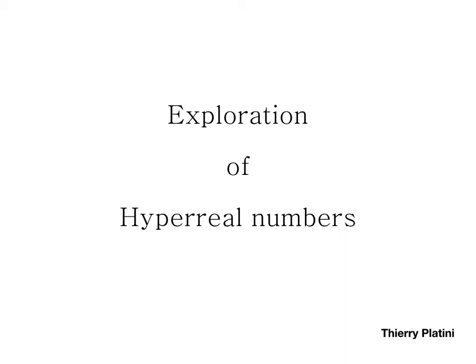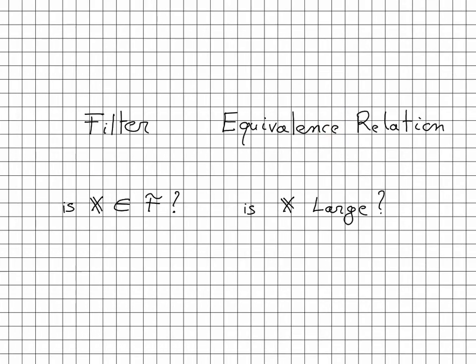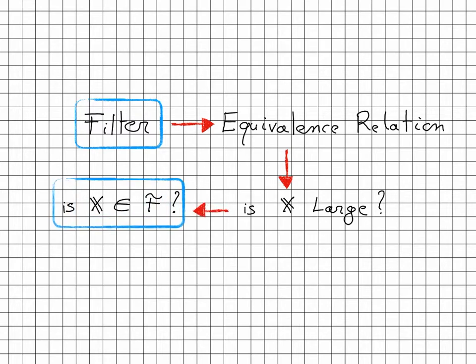Welcome! This is the third video on the construction of hyperreal numbers. Today we are going to try to understand what a filter is. This is what we need to complete the definition of the equivalence relation we have previously talked about. And in particular, the question we still have is: when can we say that a set is large? This translates into: does X belong to the filter F?